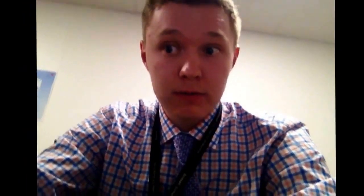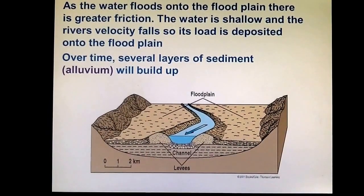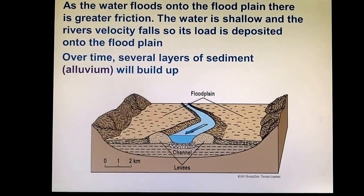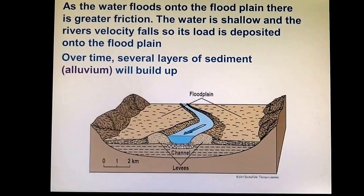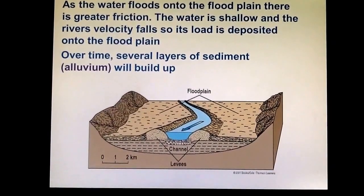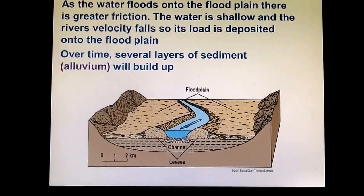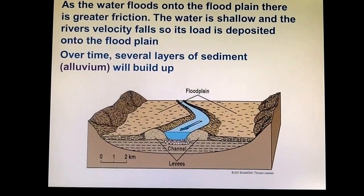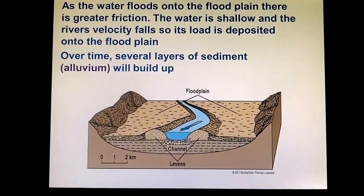Now we need to know how floodplains and levees are actually formed. As we know, when rivers flow they're carrying a lot of sediment — rocks, sand, and different materials — through transportation. When a river floods out onto a floodplain, it loses energy because there's greater friction between the water and the land it's spread out over. Because the water is quite shallow, the velocity decreases and the river loses energy.